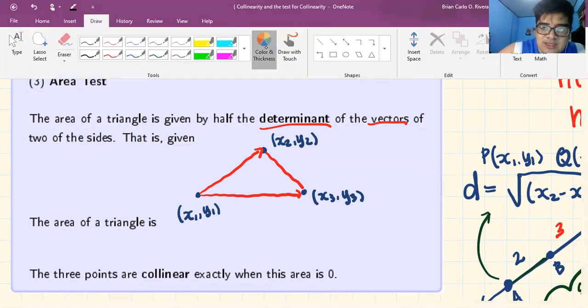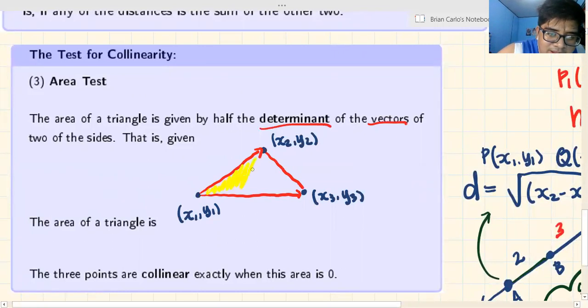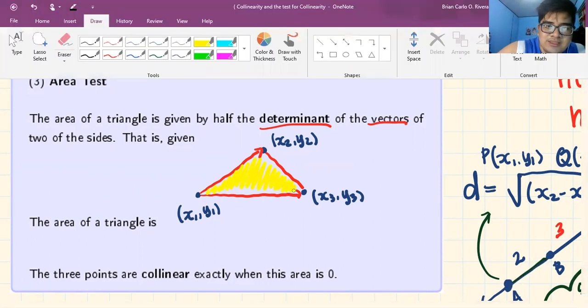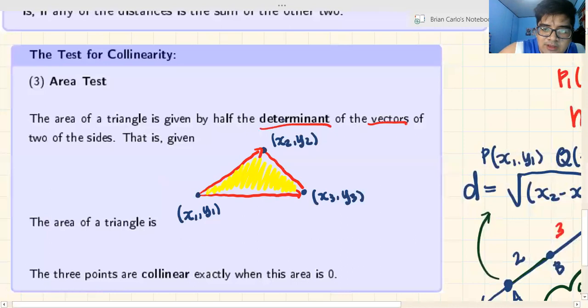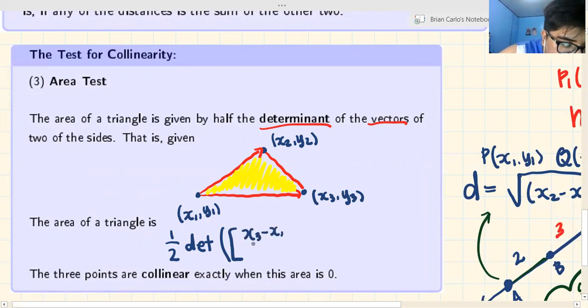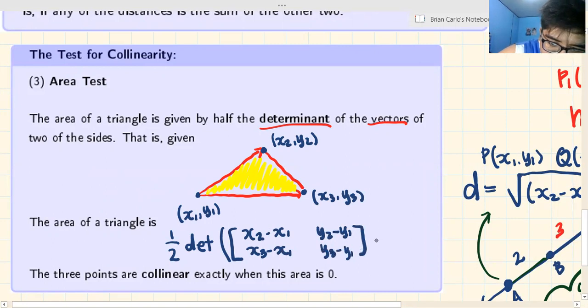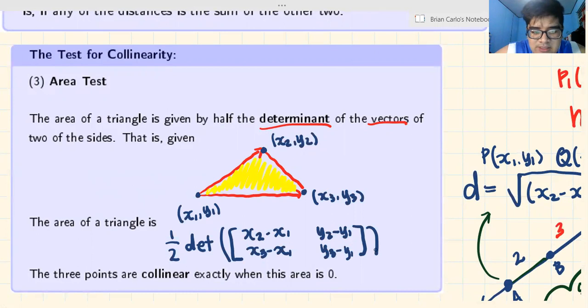I want you to disregard the terminologies for now and focus on the idea. You have a triangle with area. The area of this triangle is one half times the determinant - that's the matrix with x2-x1, x3-x1, y2-y1, y3-y1.